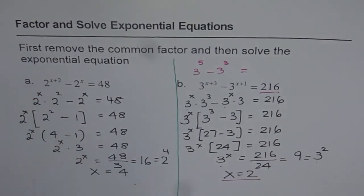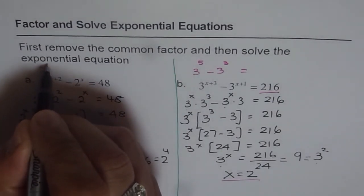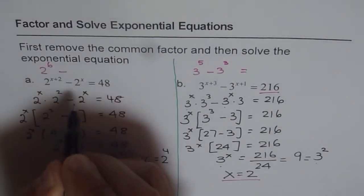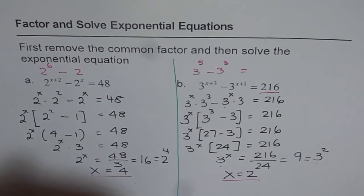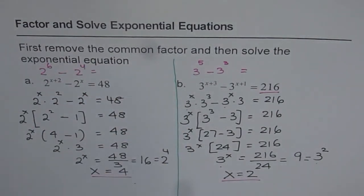Similarly, you can check the first one also. x equals to 4 is your solution. So write this as 2 to the power of 4 plus 2 as 6 minus 2 to the power of 4, and check if you really get 48. You should.